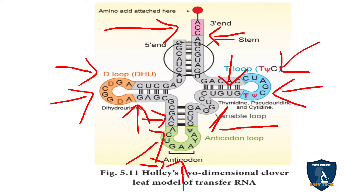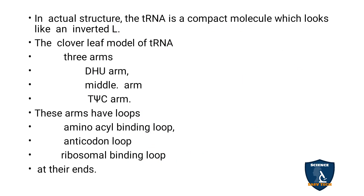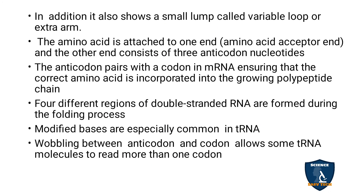The third position in the anticodon can form wobble pairing. That is the wobble hypothesis, which you have seen in the previous class. It means the mRNA can code another amino acid — for instance, instead of adenine pairing with uracil, cytosine can pair instead. That process is called the wobble hypothesis.